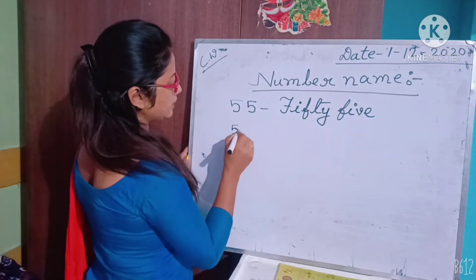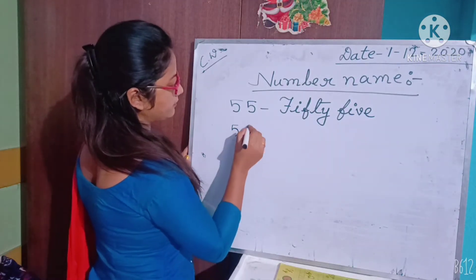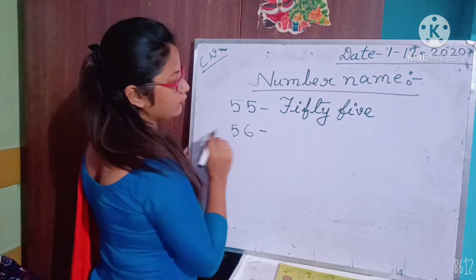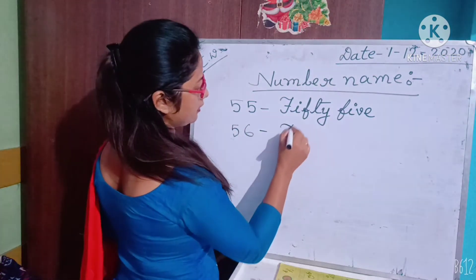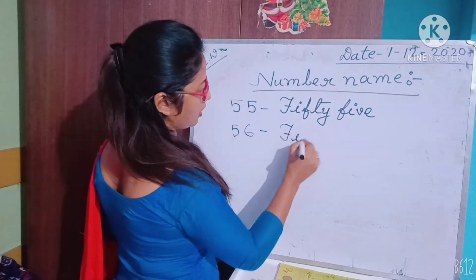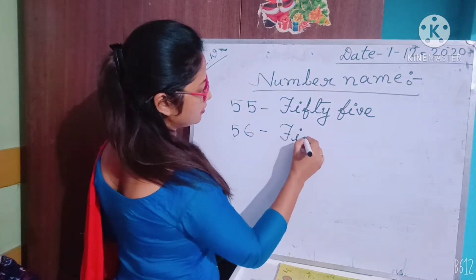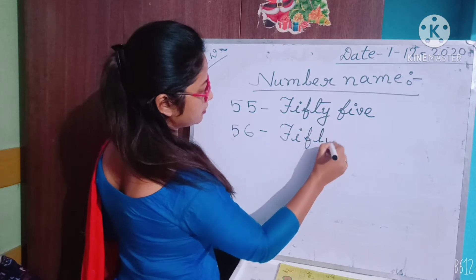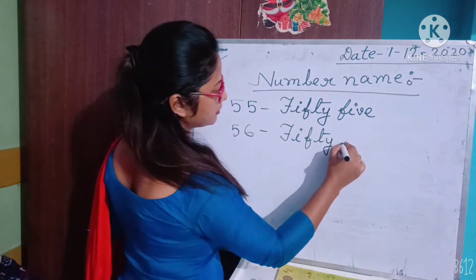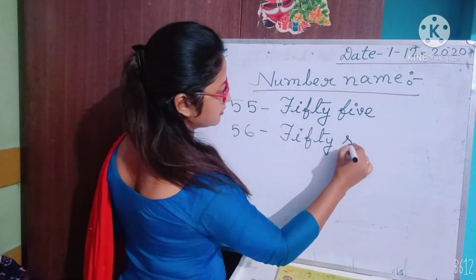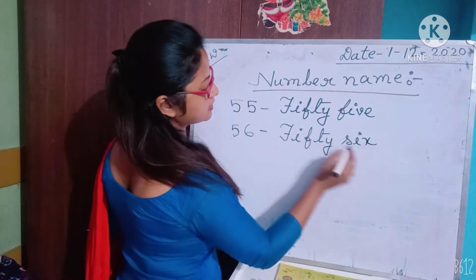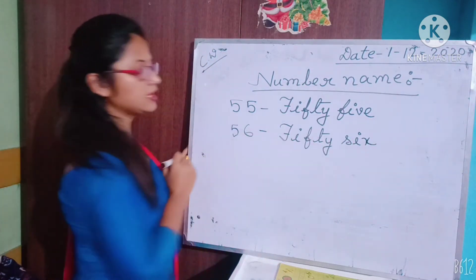Next, 56. What is the spelling of 56? F-I-F-T-Y — fifty — S-I-X — six. Fifty six.